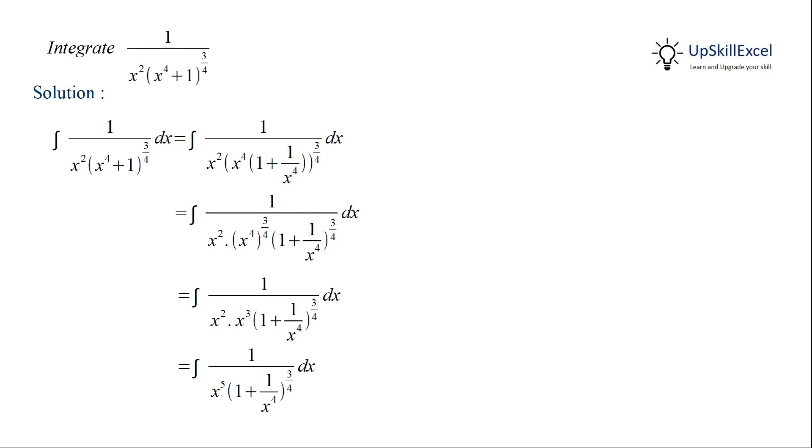Now if we substitute 1 + 1/x⁴ = t, we observe that on taking the derivative we get -4/x⁵ dx = dt. Rearranging the terms, we get dx/x⁵ = -dt/4.